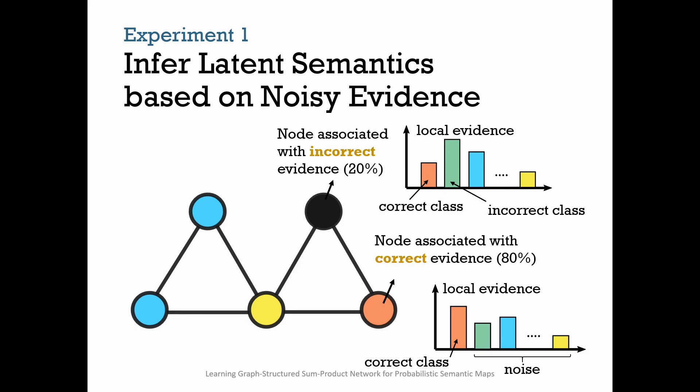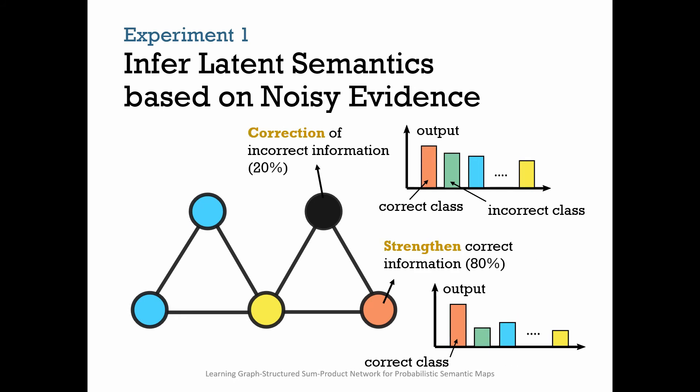Importantly, for each latent variable, we infer the marginal distribution over its semantic attributes. The goal is for the model to correct the incorrect local information and strengthen the correct information. As a result, if the classification rate calculated over the entire graph is above 80%, that means the model can make corrections.